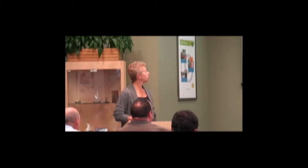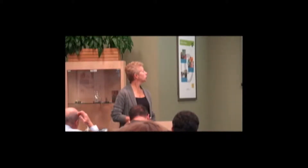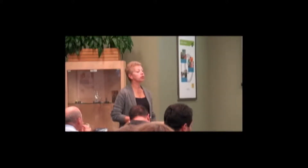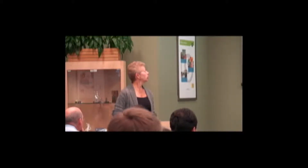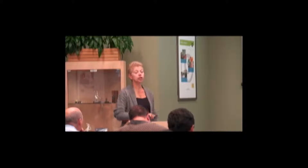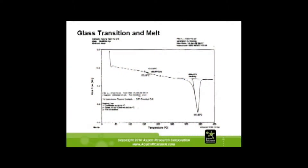By calculating with different methods, you can have as much as 45 degrees of temperature difference. So you really need to know which method you're using, especially if you're comparing results to someone else's data. Usually when you look at common reference data, the method isn't stated — so you've got to know what you're doing. Here is the melt: the heat of fusion for this sample is 42.39 joules per gram, which is the area underneath the curve.